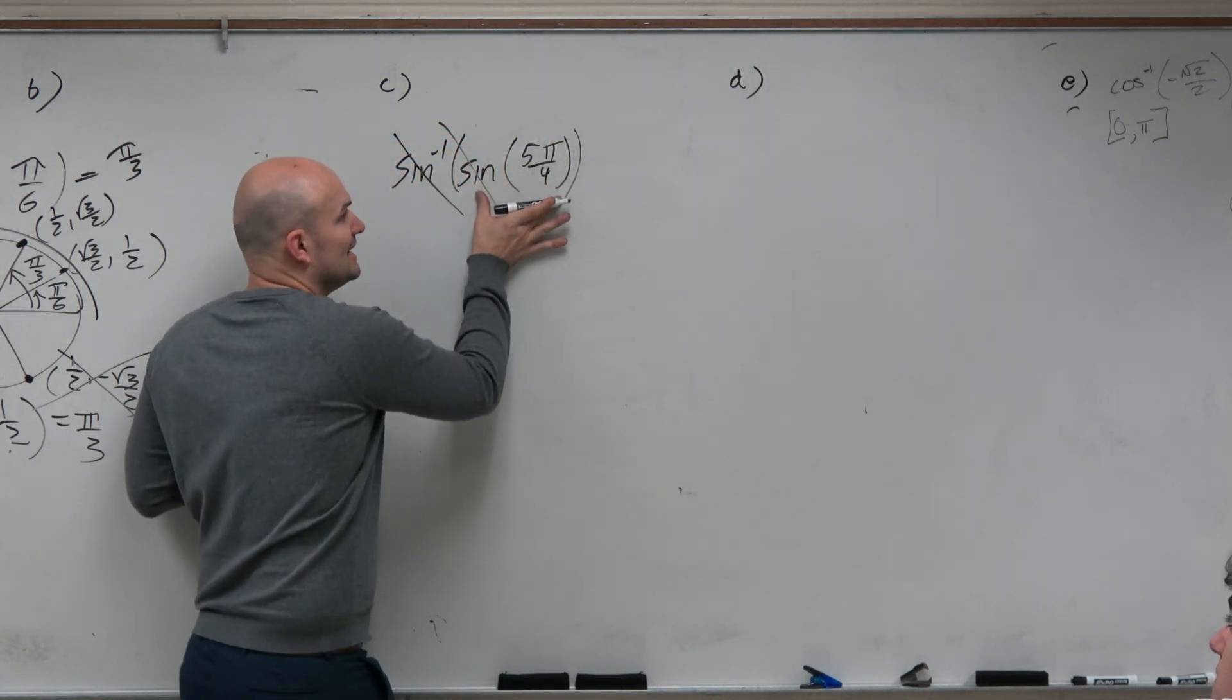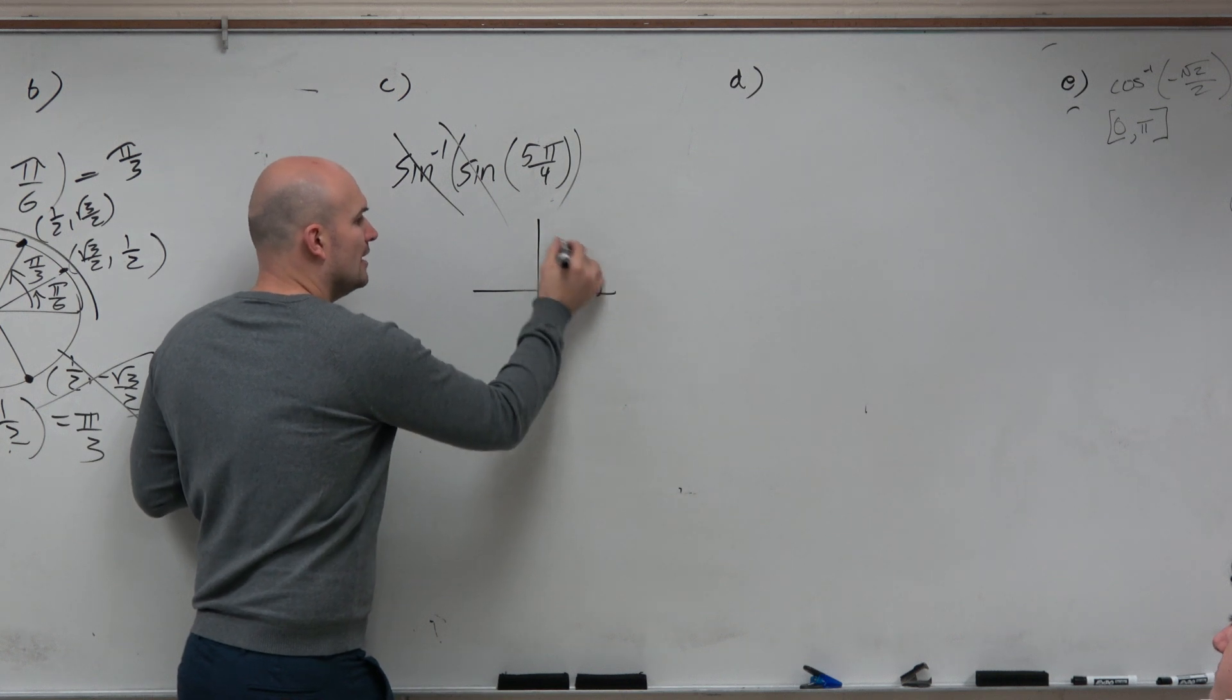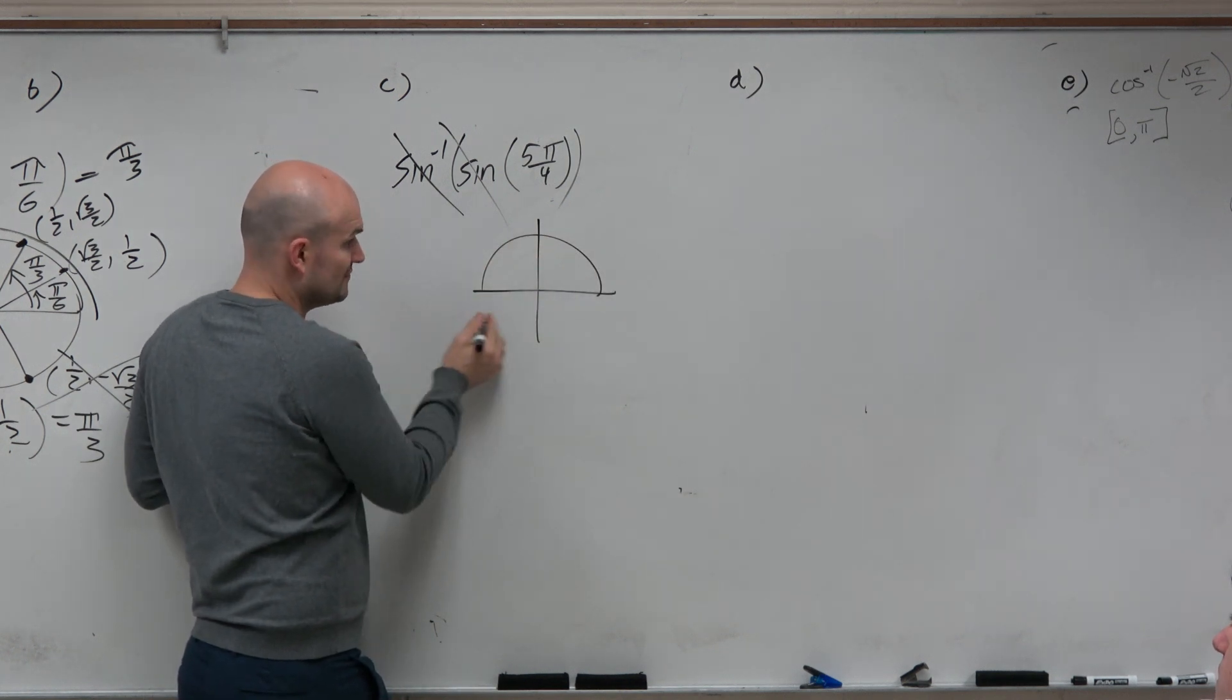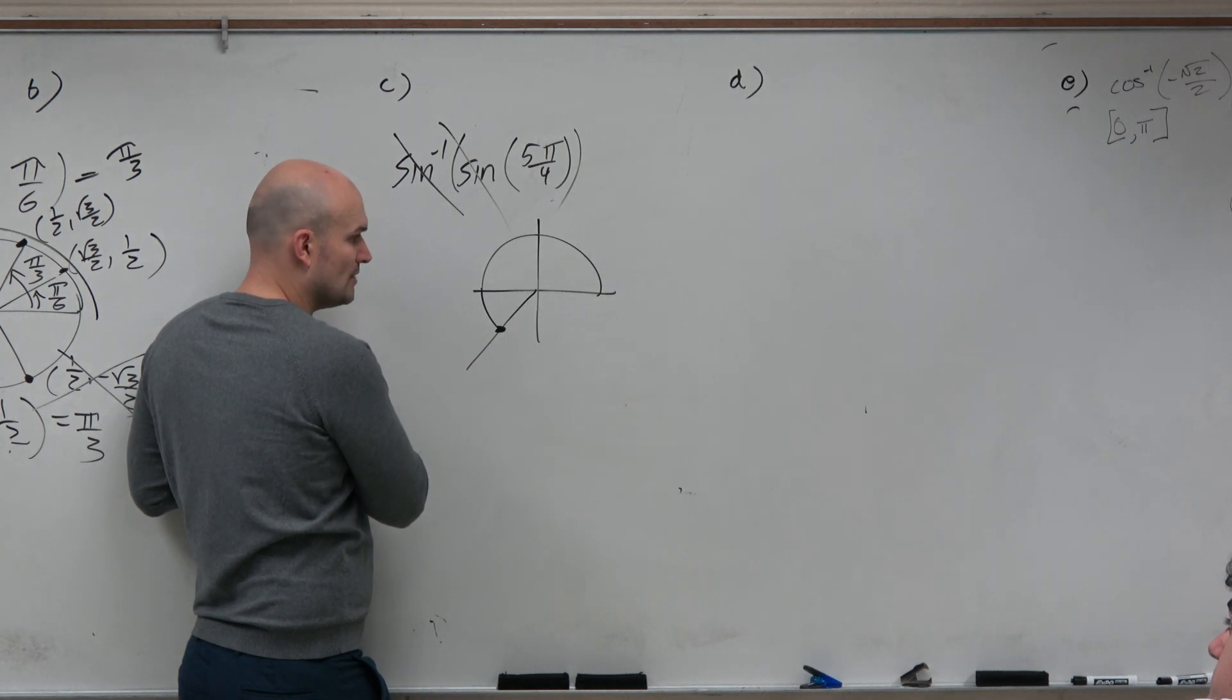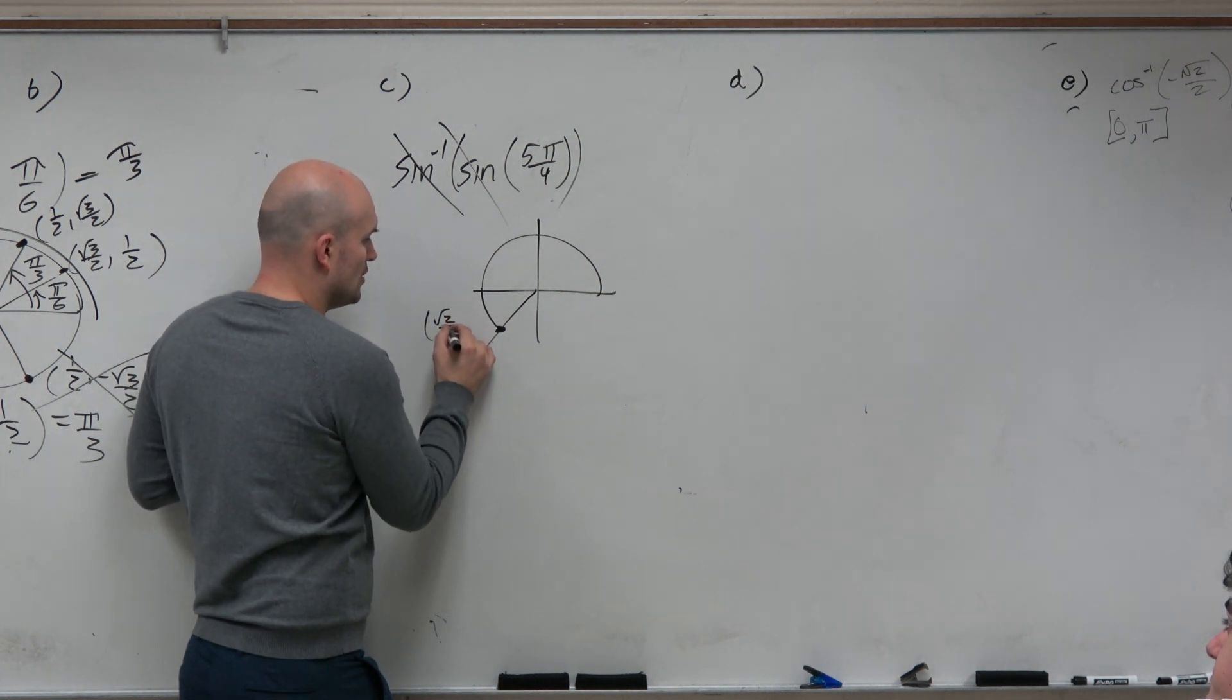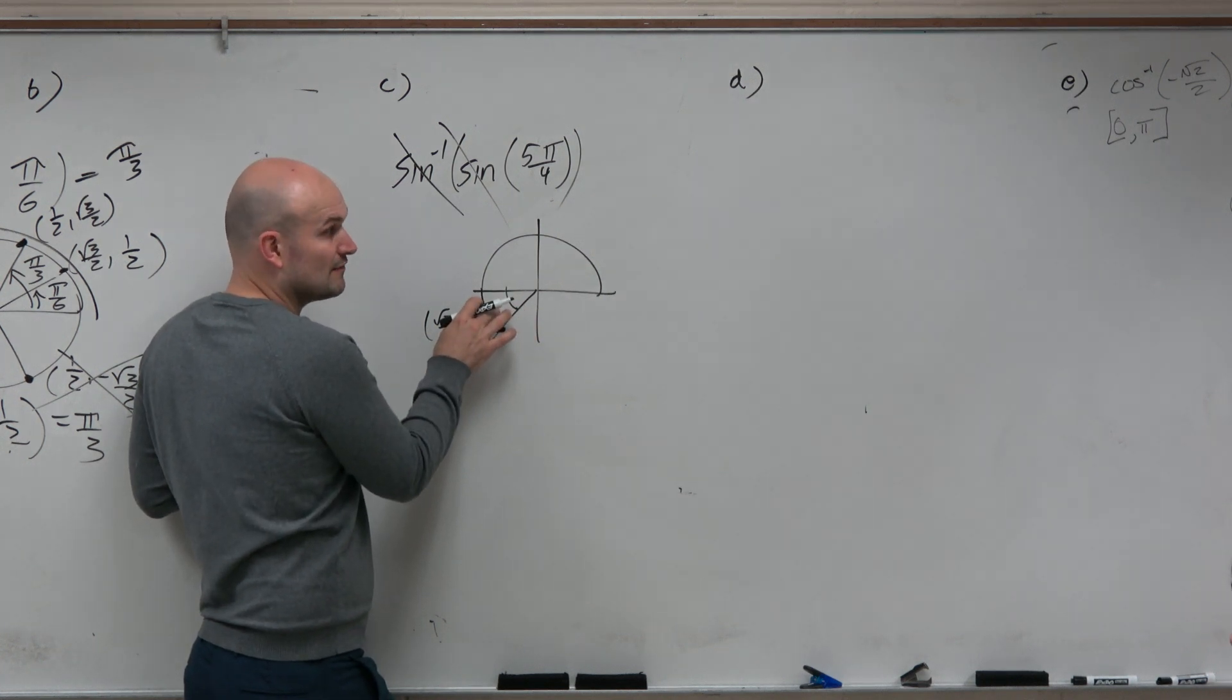So why don't we do sine of 5 pi over 4? So again, we say, all right, well, where's 5 pi over 4? Half of a circle is 4 pi over 4. So 5 pi over 4 is an extra pi over 4. Hopefully you recognize that coordinate point is square root of 2 over 2, comma, square root of 2 over 2. Because it has the same reference angle, pi over 4.